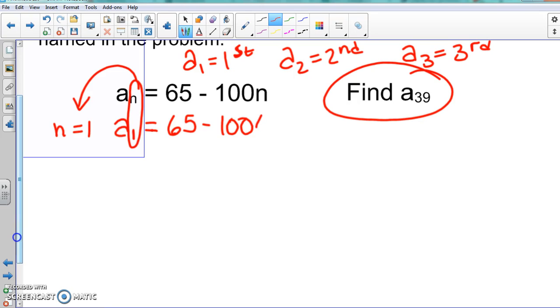So when we do our problem, we put one here in for n, and then we work it out and that's going to give us what a₁ is. And here if you put that in the calculator, it gives you negative 35. So here a₁ equals negative 35.